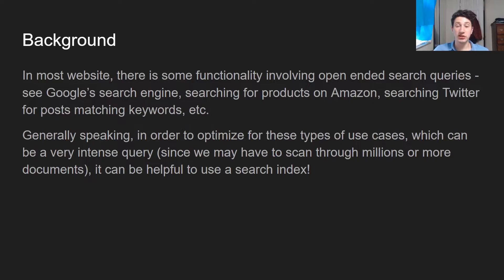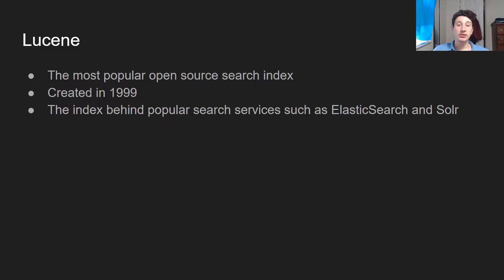Search indexes — what are they? A lot of companies have some sort of search functionality embedded in their application. If you're just taking Google, for example, it's pretty much their entire business. Amazon has the ability to search for products based on a bunch of different filters, and you can do the same on Twitter for posts matching certain keywords. But generally speaking, databases aren't great for these search functionalities. We want to use a different type of data structure or technology in order to optimize for search functionality and make it such that these very complex queries can actually run really quickly.